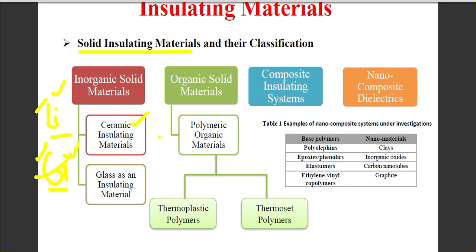For ceramic used in transmission lines, if breakdown occurs, the material will be fractured. If high voltages are applied, it will act as a conductor. Comparing ceramic and glass: glass has less breakdown strength compared to ceramic. That is why glass insulating material is used only in special cases.